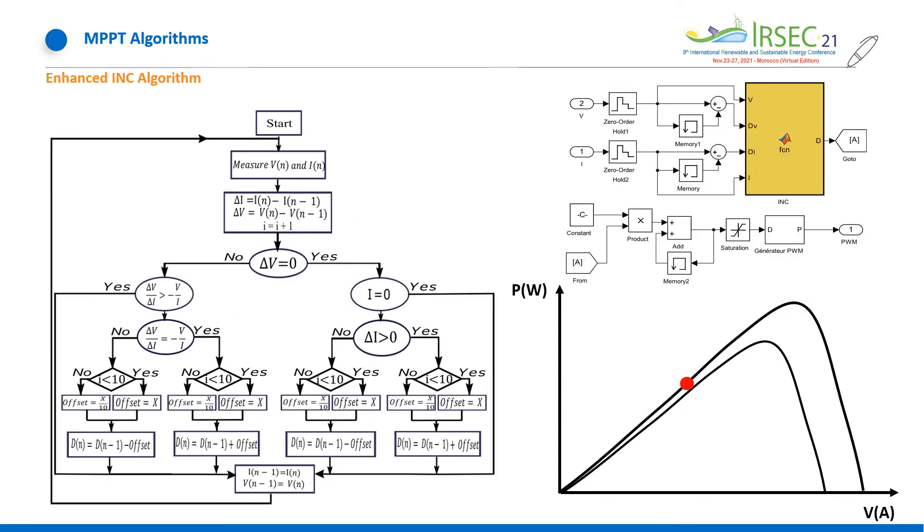About enhanced incremental conductance, it follows the same principle of P&O, while the incremental conductance addresses some P&O weaknesses like wind, sudden change, and climate.